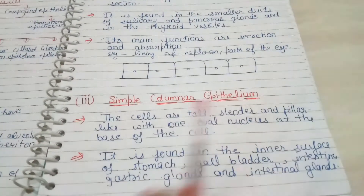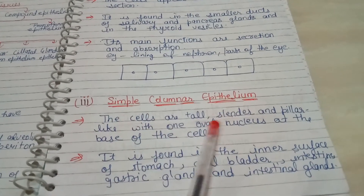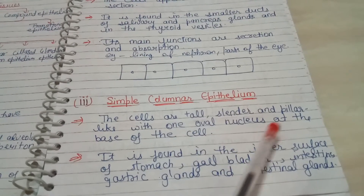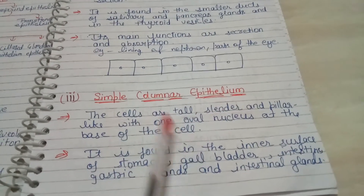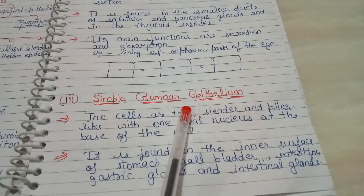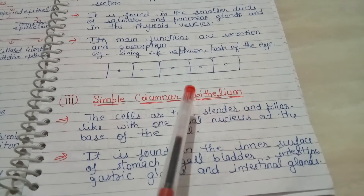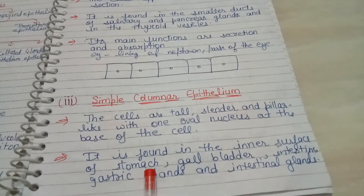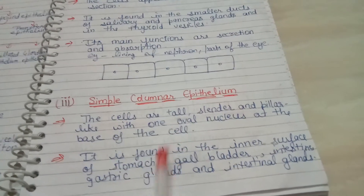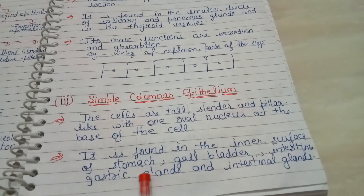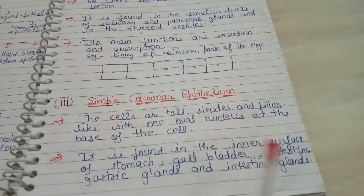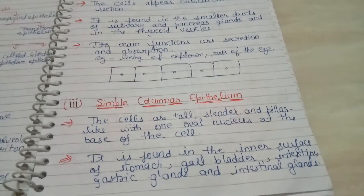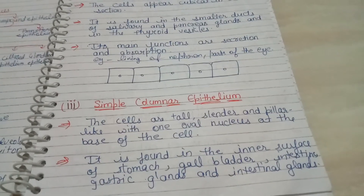Now we discuss about simple columnar epithelium. The cells are tall, slender, and pillar-like, with one oval nucleus at the base of the cell. Columnar means pillar-like structures. It is found on the inner surface of the stomach, gallbladder, intestine, gastric glands, and intestinal glands. Simple columnar epithelium tissue is present on those parts.